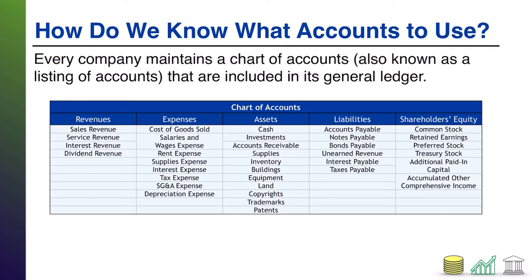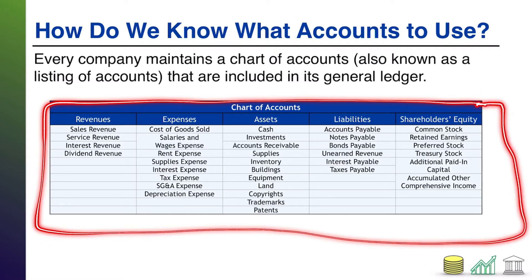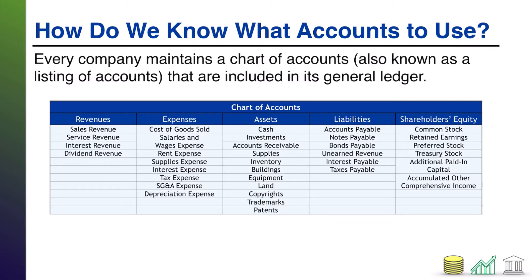Another question that tends to come up is: inside the ledger are all the individual account ledgers, so what accounts do you use? You'll notice that some companies might call their cash account 'cash,' while others call it 'cash and cash equivalents.' Some companies might call their inventory 'inventory,' others might call it 'merchandise.' Every company might have slightly different terminology. Within every company, there should be what's known as the chart of accounts, also known as a listing of accounts, which tells you the accounts used in that company. In introductory accounting courses, there are common accounts you tend to see used as examples throughout — this is just a good reference.